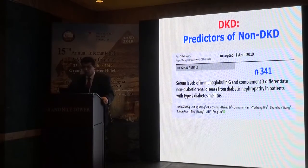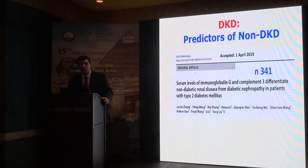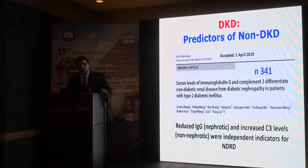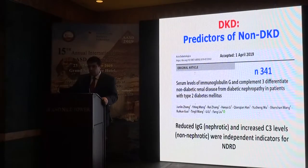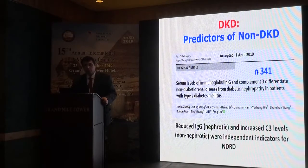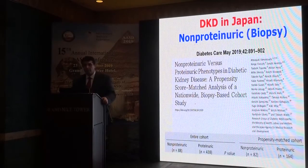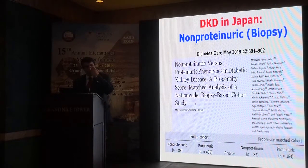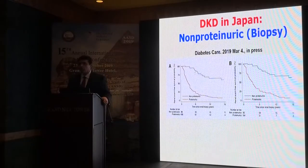Regarding other predictors of non-diabetic renal disease: in a patient with proteinuria, can we predict whether it is due to diabetes mellitus or not? A 2019 study found that patients with nephrotic syndrome and reduced IgE most commonly have non-diabetic renal disease. If a patient has non-nephrotic proteinuria with increased complement 3 level, this is usually non-diabetic renal disease. Most patients are proteinuric and the minority are non-proteinuric, and proteinuric diabetic patients have the worst outcomes, progressing more rapidly to end-stage kidney disease.